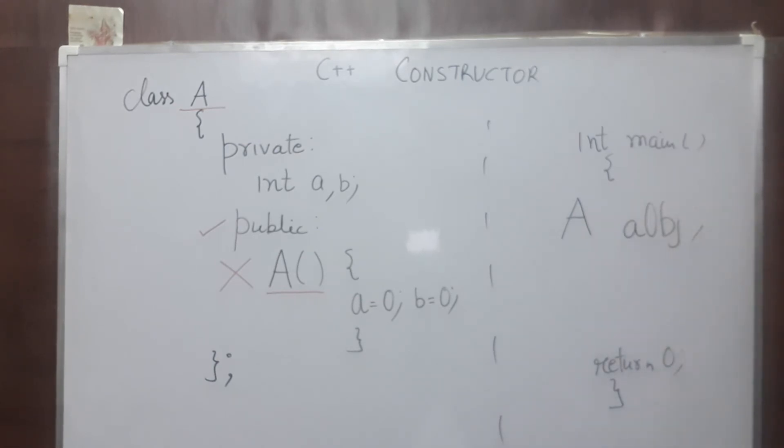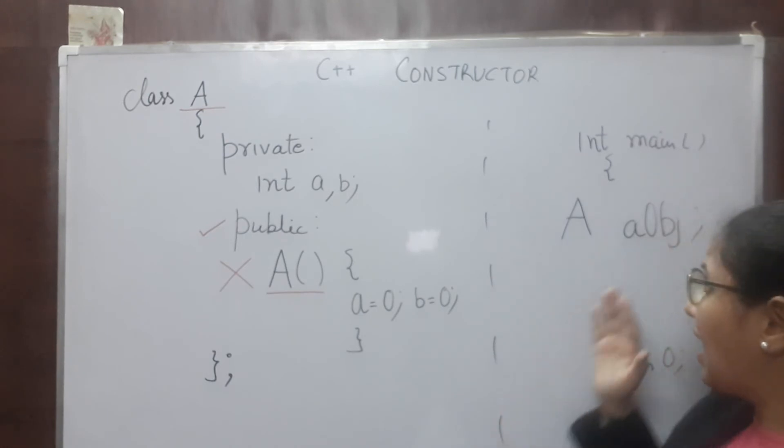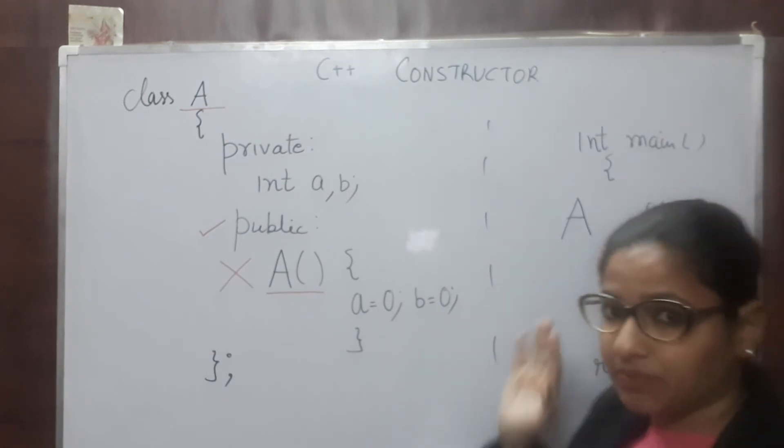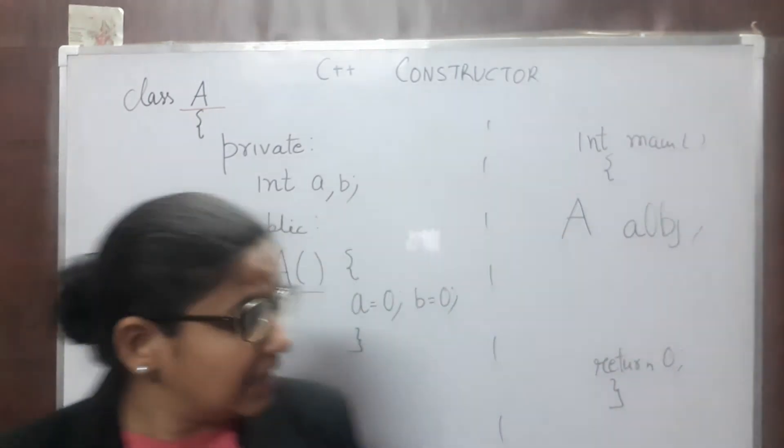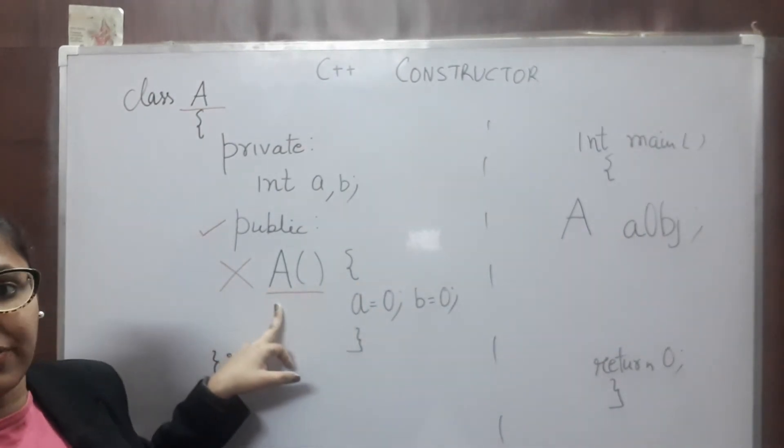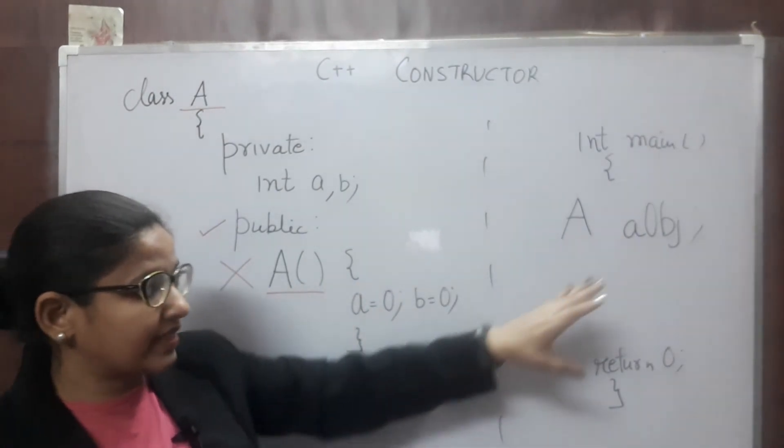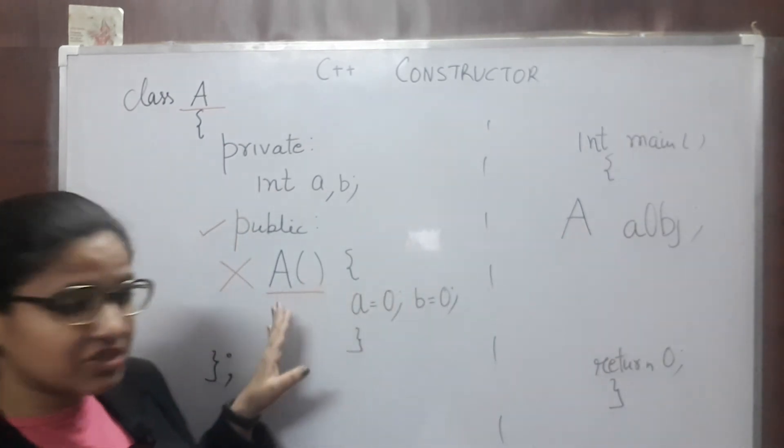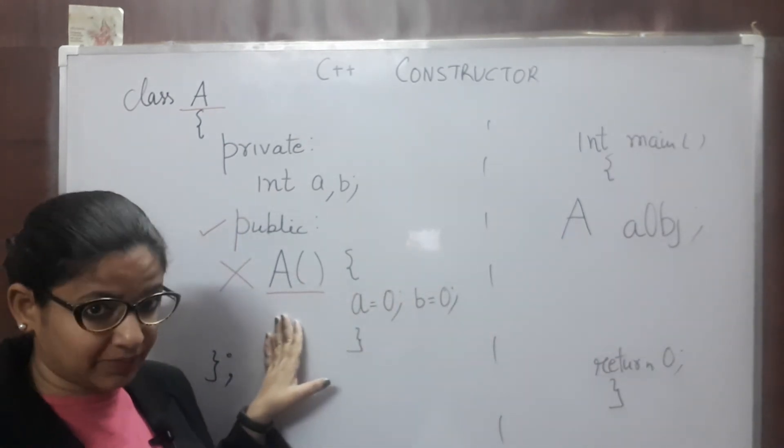When you write this statement, one object, A object is created. And this object, please listen carefully. This object calls this member function automatically. That means when you are creating your object, constructor is invoked automatically.